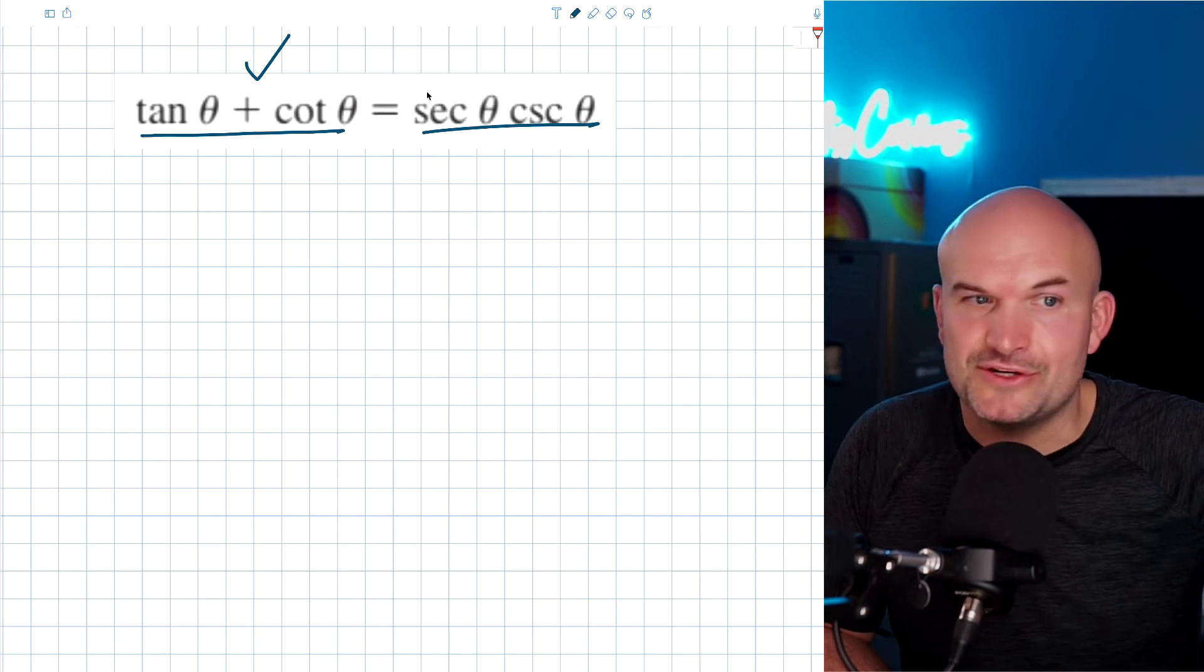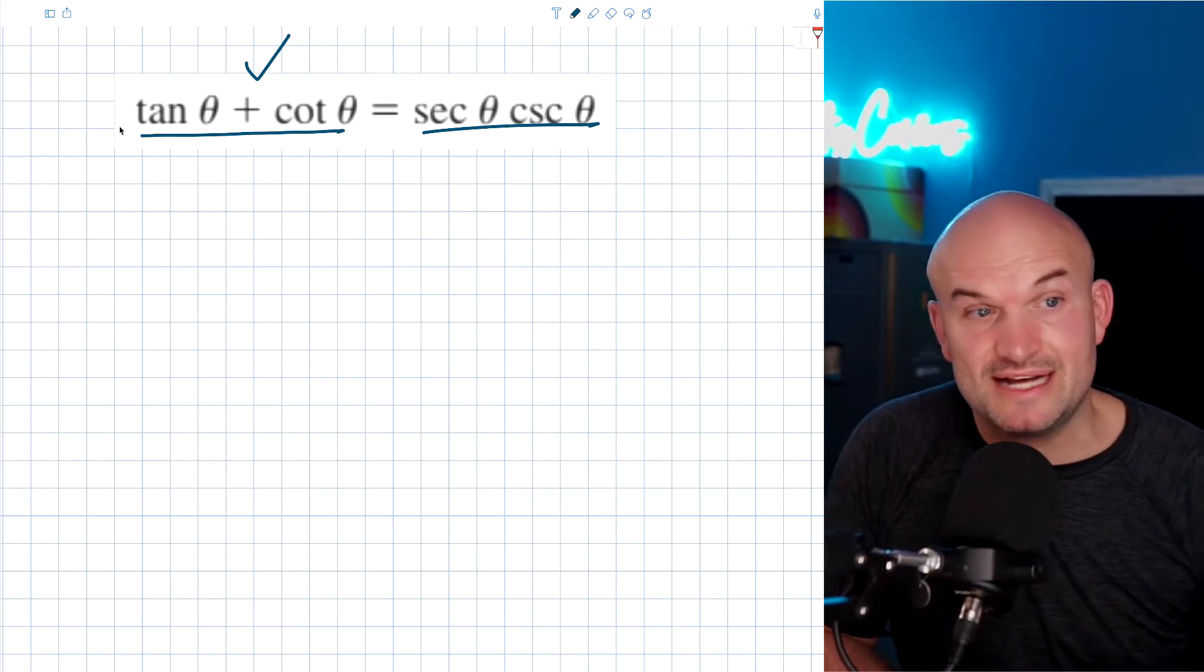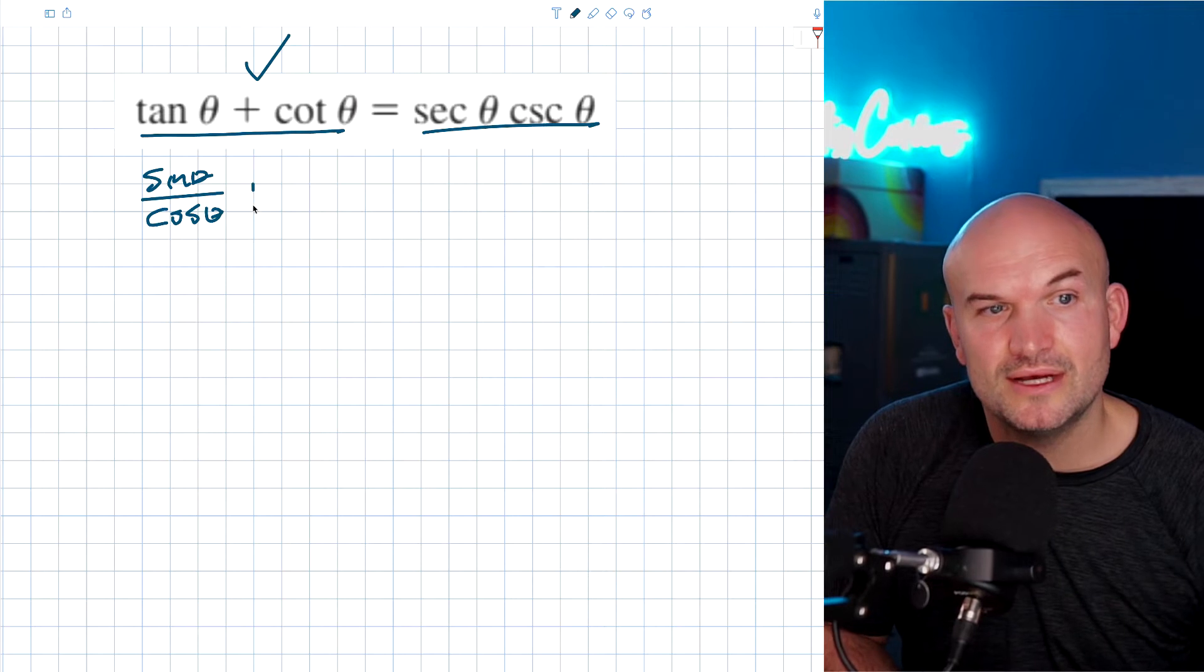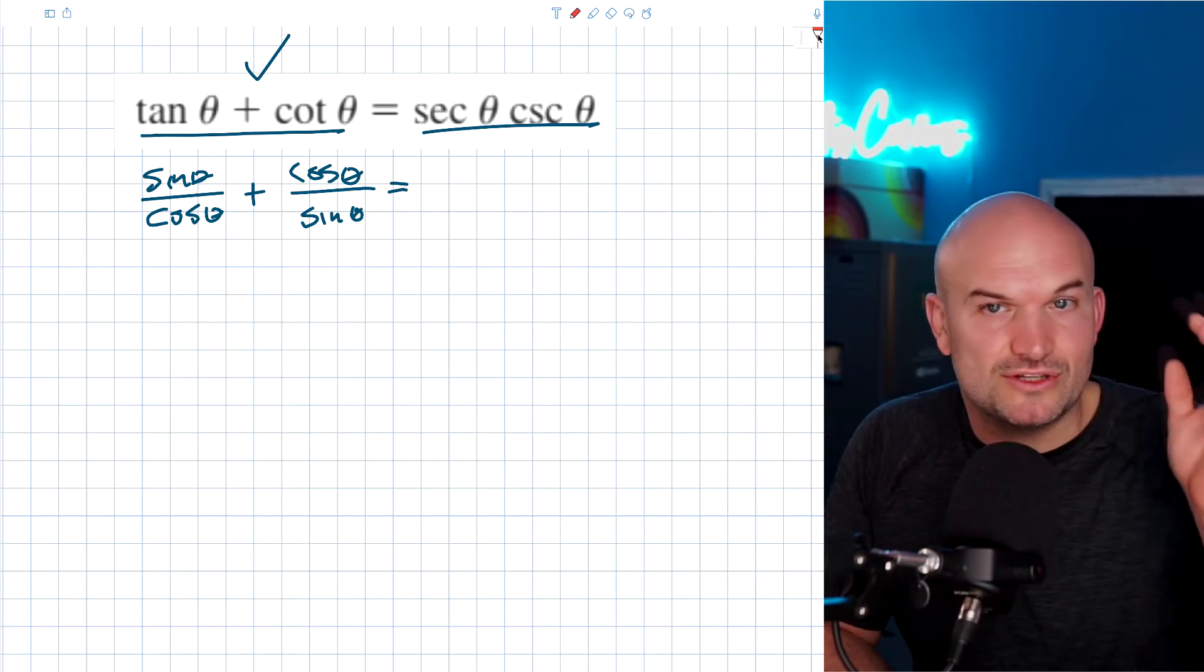So another one of the tips that we get into is when you get stuck or you're not sure what to do, always rewrite things in terms of sines and cosines. So remember tangent of theta can be written as sine of theta over cosine of theta. Plus a cotangent can be written as cosine of theta over sine of theta. Now what this does is this rewrites them now as rational expressions.